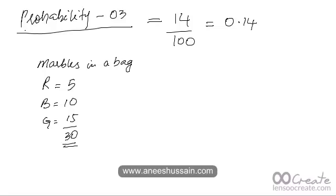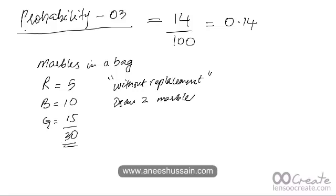The question requires you to draw two marbles — not one but two — at random, and it says that the drawing has to be done without replacement. Without replacement means that once you've taken out a marble you do not put it back in the bag. So every time you draw a marble the total number reduces by one. The question asks: what is the probability that both marbles are red?